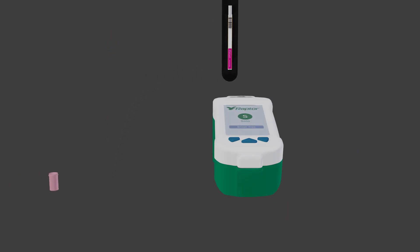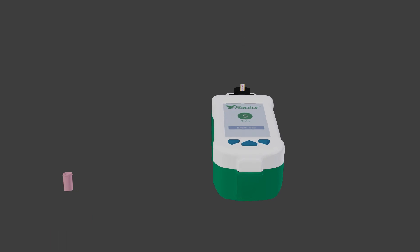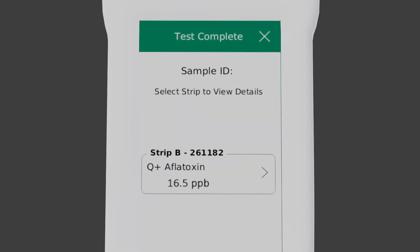Place Raptor cartridge into port. Add 400 microliters of sample to cartridge. Result will be displayed. Remember to multiply your result by the dilution factor. For this example, multiply by 2.